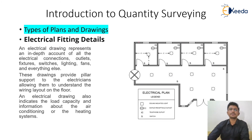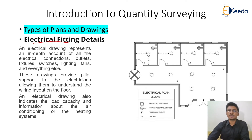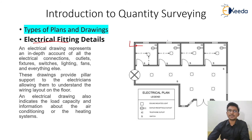The next category is electrical fitting drawings. These drawings show how electricity enters the house from a single point, how it is distributed from the electrical board, how many fan switches, bulb switches, tube lights, telephone outlets, and other fittings are present. This drawing is important for calculating quantities related to all electrical fittings in the house.